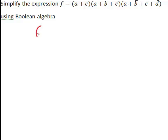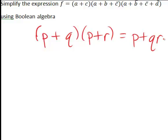One of the very useful laws of Boolean algebra says that if we have p plus q times p plus r, this is equal to p plus q r. And this will come in handy here when we look at the first two brackets.